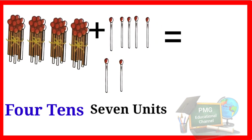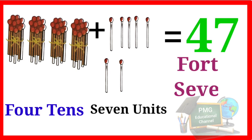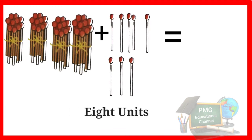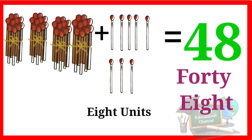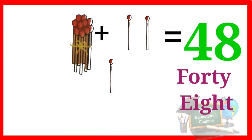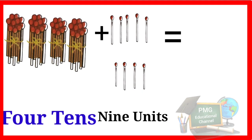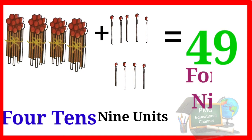Now four tens seven units, 47: F-O-R-T-Y S-E-V-E-N, 47. Four tens eight units, 48. Here is four tens nine units, 49: F-O-R-T-Y N-I-N-E, 49.